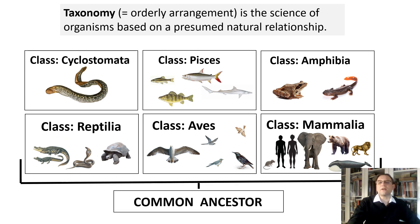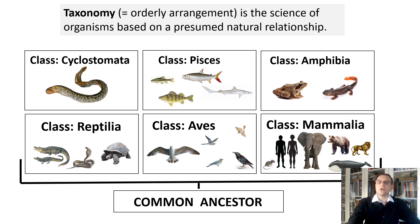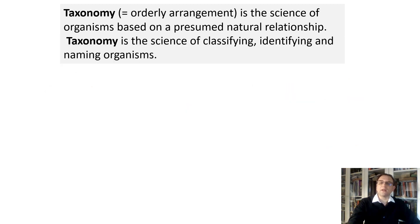All these classes originated from a common ancestor; they all belong to phylum Chordata, which means vertebrates. This is why we define taxonomy as a branch of biological sciences that classifies organisms based on presumed natural relationships. Another way to define taxonomy is to say it is the science of classifying, identifying, and naming organisms.